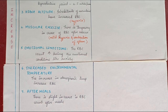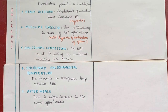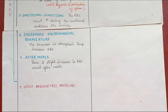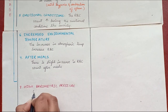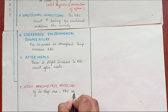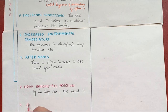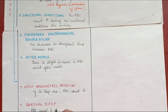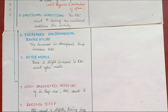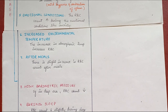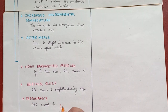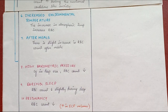Physiological decreases: At high barometric pressure, as in deep sea, RBC count decreases. During sleep, RBC count decreases slightly. In pregnancy, RBC count decreases due to an increase in extracellular volume.